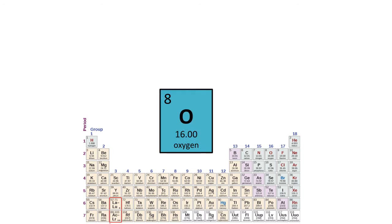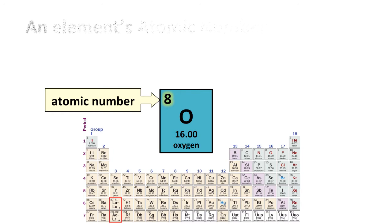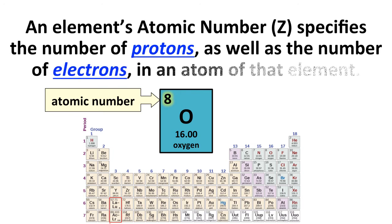Now, back to the periodic table for a moment. When we look at a particular element, it's going to have some information in a box on the periodic table. In this case, we're looking at oxygen. The symbol O for oxygen, sometimes the name's written, and then a number at the top, eight for oxygen, and a number below that, 16.00 for oxygen. The top number is what's called the atomic number. And the atomic number, sometimes we symbolize by the letter Z, it specifies the number of protons and also the number of electrons in an atom of that element. So for oxygen, its atomic number is eight. That means it has eight protons and it has eight electrons in one atom of that element.